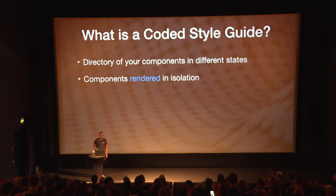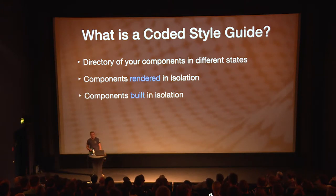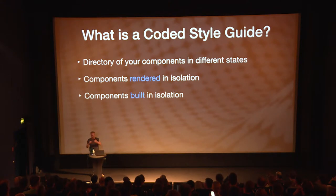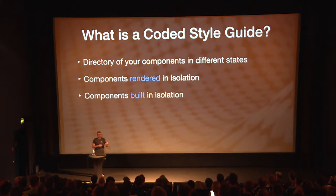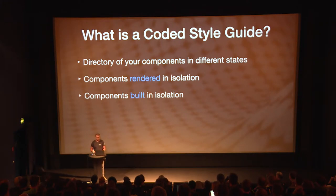Another thing you can use coded style guides for is building your components in isolation. When you're a developer and you want to build a new feature that requires some sort of UI component, it can be very hard to just start and integrate it into your project, because as soon as you add something, your whole layout might break, or it's very hard to deal with all the other dependencies and side effects. You want to first build your component and then afterwards integrate it — and this process is very much supported by coded style guides.